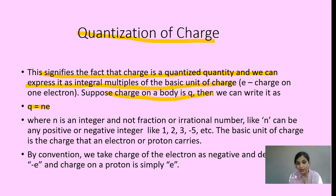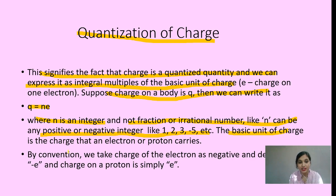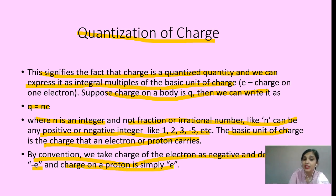The charge on a body is q equals ne. Here n is an integer — it cannot be a fraction or an irrational number. n can be positive or negative, like 1, 2, 3, minus 5, etc. The basic unit of charge is the charge that an electron or proton carries. For the electron, it is minus 1.6 into 10 to the power minus 19 coulomb. For the proton, it is plus 1.6 into 10 to the power minus 19 coulomb. By convention, the charge of an electron is denoted as minus e, and the charge of a proton is denoted as plus e, or simply e.